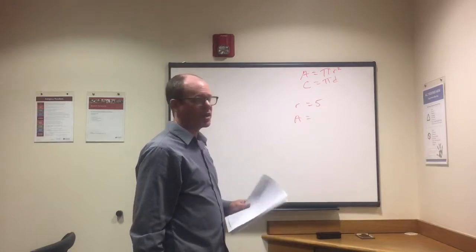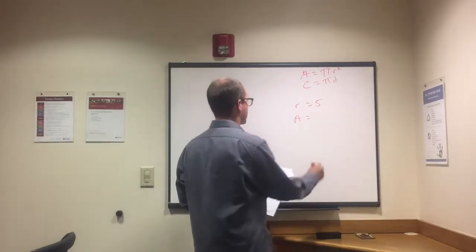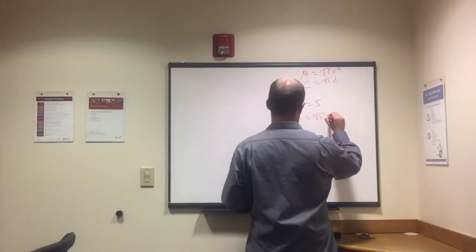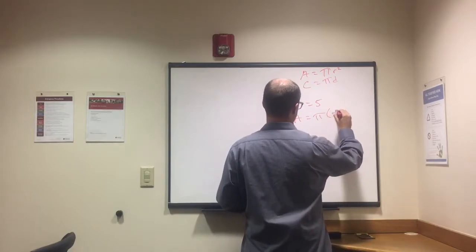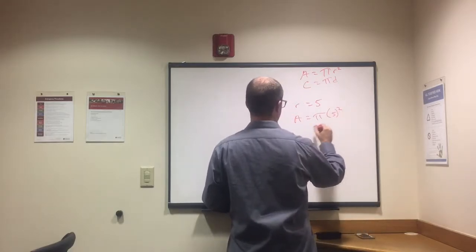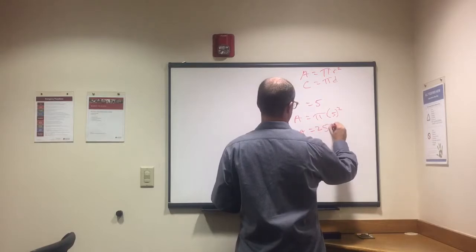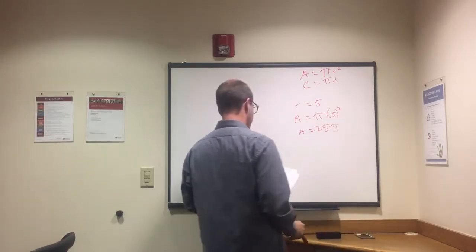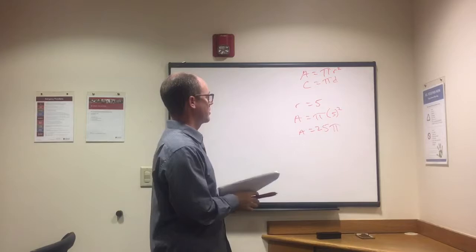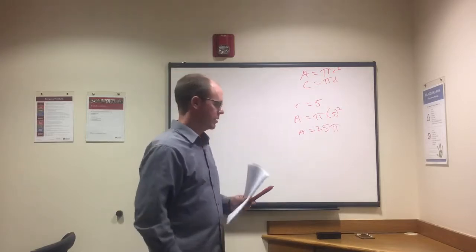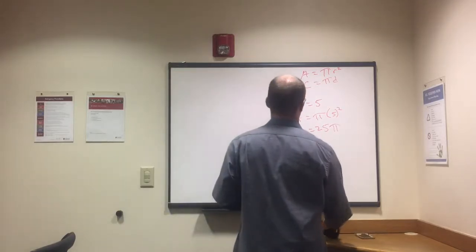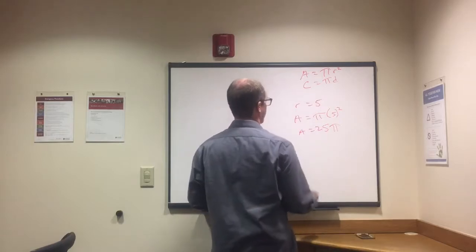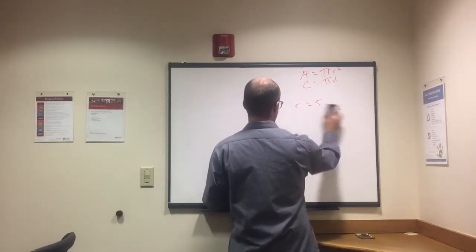So again we have area equals pi r squared. Area equals pi times 5 squared. 5 squared is 25, right? Area equals 25 pi. Pretty straightforward as long as we know area equals pi r squared.